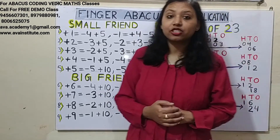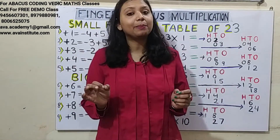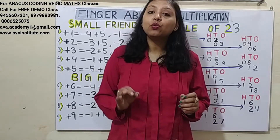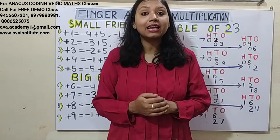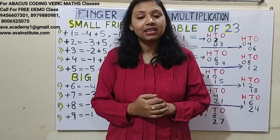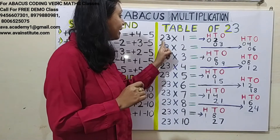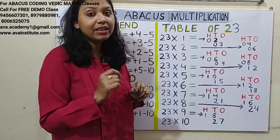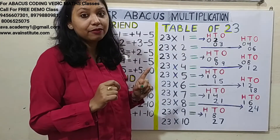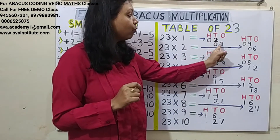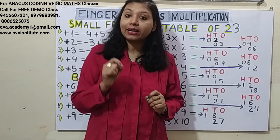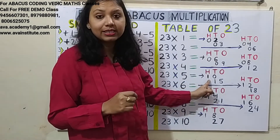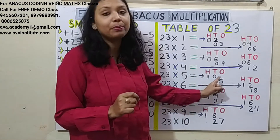Now let us revise the rules of multiplication. The first rule is: you have to learn the tables up to 9. If you have learned the tables up to 9, you will be able to do any table up to 99 without memorizing it, within seconds. The second rule is: multiply the tens digit and represent the result in 100's and 10's. Then multiply the units digit and represent the result in 10's and 1's. If the answer is 1 digit, put a 0 to make it a 2-digit number. If the result is already 2 digits, simply represent it.